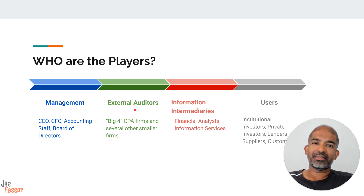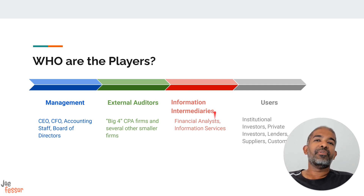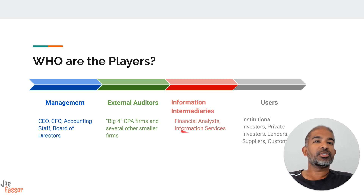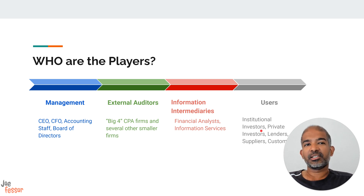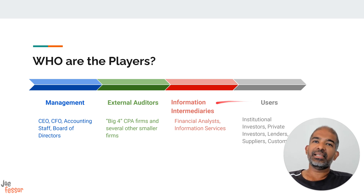Once the auditors have checked the financial statements, they are published and presented to the public. Then comes the role of the various information intermediaries, which consist of financial analysts, investment bankers, the various credit rating agencies, and information services such as Bloomberg or Yahoo Finance. Information passes through these intermediaries to the final users — institutional investors, private investors, lenders, suppliers, customers, and government regulators. These users sometimes may not look at the financial statements directly but get their information from these intermediaries.